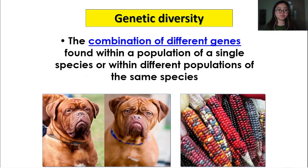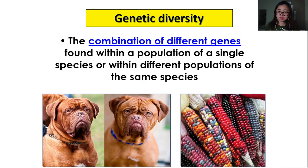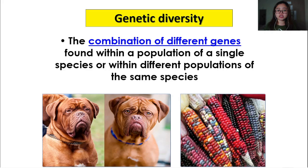So we'll talk about what is genetic diversity. This is the combination of different genes found within a population of a single species or within different populations of the same species. Bila kita tengok satu spesies organisme, contohnya dalam spesies anjing, apakah kepelbagaian dari segi genetic, dari segi DNA dalam spesies tersebut? How different is one individual dog's DNA from the other individual dogs in that species? This can also be applied to plants and other organisms. For example, within corn — dalam spesies jagung, there's already diversity in terms of the seed color and the seed shape.